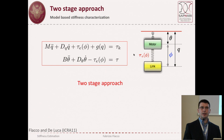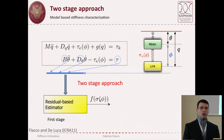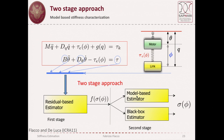Coming back to the dynamic equation of a single transmission, we present a two-stage approach. Using knowledge of motor inertia, motor damping, and the command torque, we obtain an estimation of the flexibility torque. Instead of using an external torque sensor, we use a residual-based estimation — similar to Professor De Luca's approach for estimating external torques, but here estimating the flexibility torque at the link side. Then in a second stage we present both a model-based and a black-box estimator to extract stiffness from this information.